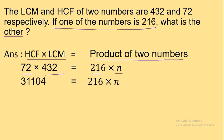Next step: 72 multiplied by 432 equals 31104. So n is equal to 31104 divided by 216. If I divide, the answer is 144. So n is equal to 144. The second number is 144.